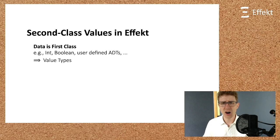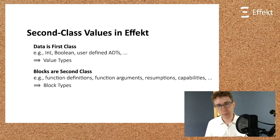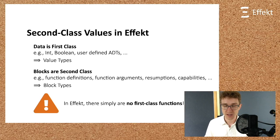It is actually very easy. We treat all data as first-class. That includes built-in types like int or boolean, but also user-defined algebraic data types. In our type system, we speak of value types. In contrast, all blocks are second-class. This includes function definitions, function arguments, resumptions and capabilities. To avoid confusion, we typically do not speak of functions but of blocks. Similarly, in our type system, we speak of block types. We will see what that means in a second. Let me point out that this implies that, in Effekt, there simply are no first-class functions. We thus killed every functional programmer's favorite feature.